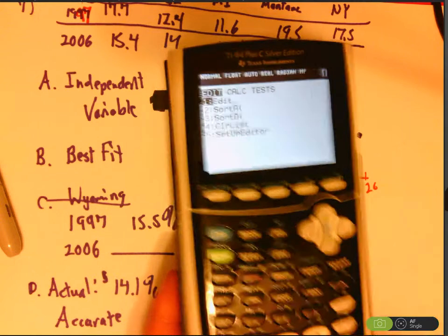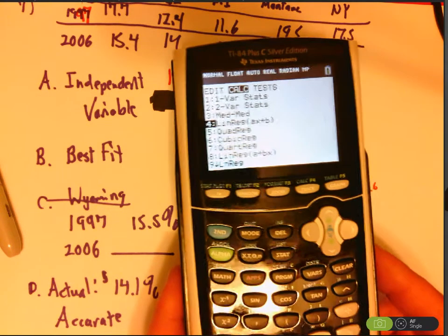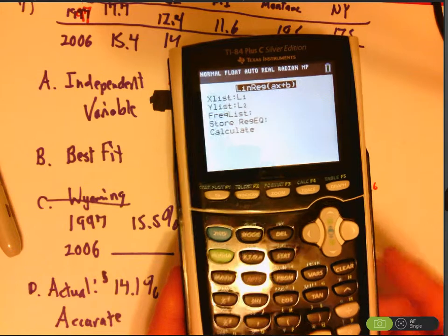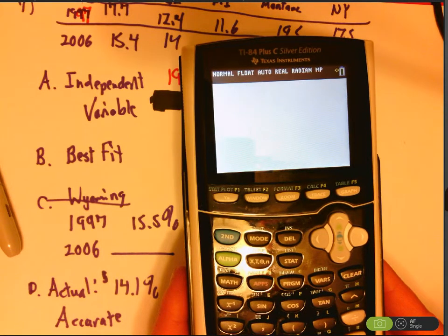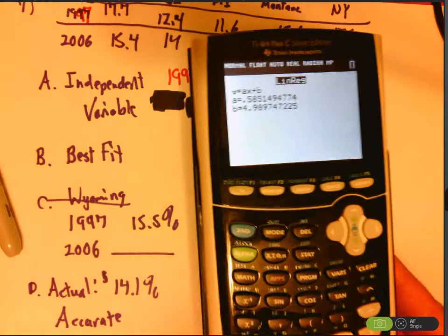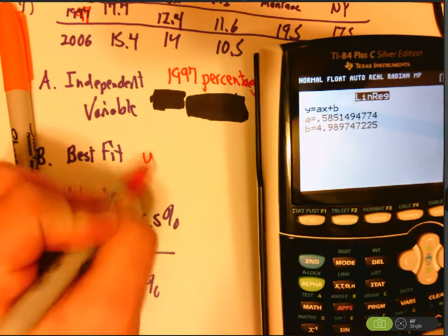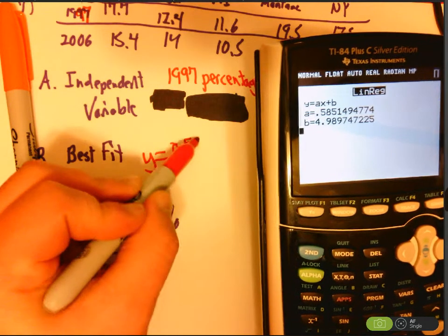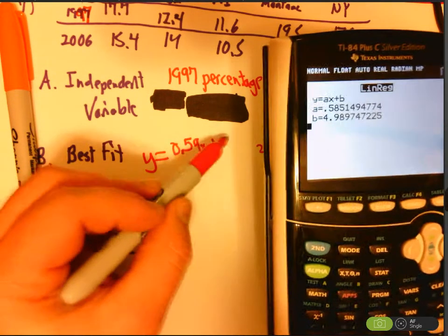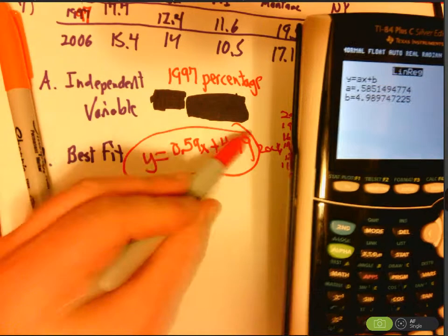Go to the stat menu, go to calc, go down to linear regression, because we're making a line of best fit, hit enter. Go down to calculate and hit enter. And you get a line of best fit of Y equals 0.59ish plus 4.99. So that's my line of best fit.